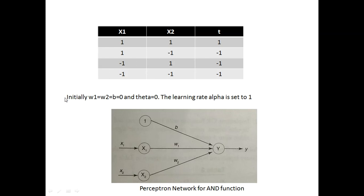Initially we are making the value of w1, w2, and bias zero, and the learning rate alpha is set to 1.